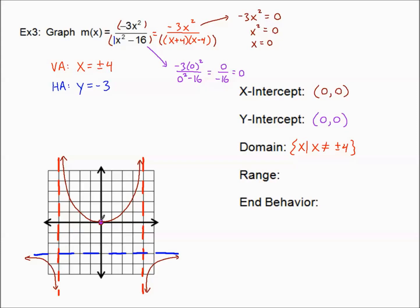The range starts at negative infinity. Going up, we level out at the horizontal asymptote at negative three but don't touch it — so parenthesis there. Then we union that with the rest: we skip all values until we reach zero, which we do include because it's a solid dot. Then we go all the way up to positive infinity. So range is (−∞, −3) ∪ [0, +∞).